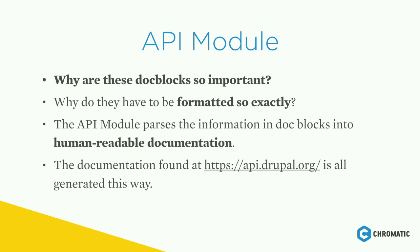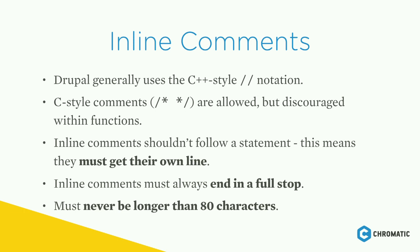Doc blocks are formatted exactly because the API module parses the information in doc blocks into human-readable documentation. All of the documentation found at api.drupal.org is generated this way. Drupal generally uses C++ style notation with two slashes for inline comments. C-style comments are allowed but discouraged within functions. Inline comments should not follow a statement — they get their own line — and must always end in a full stop. They must never be longer than 80 characters.